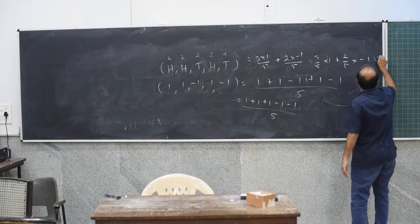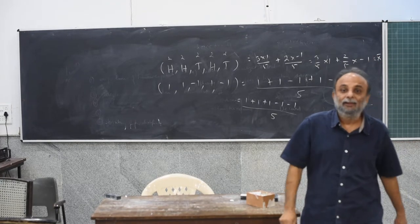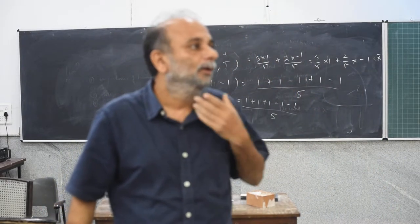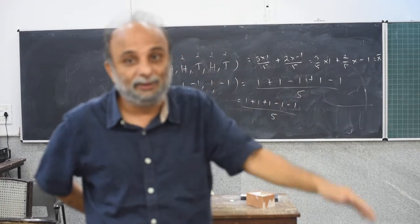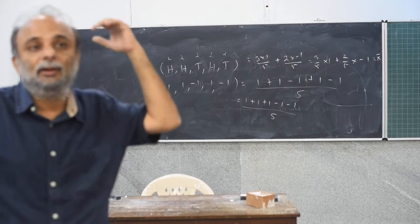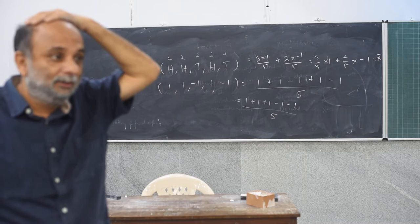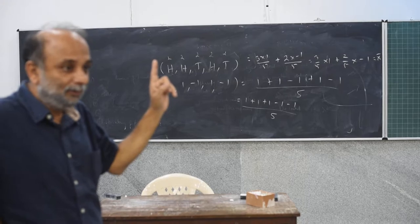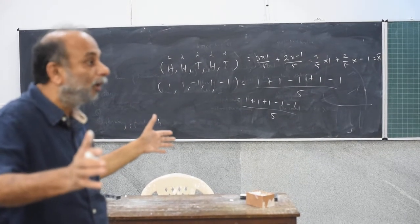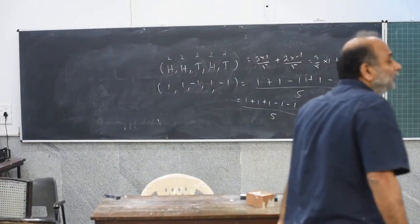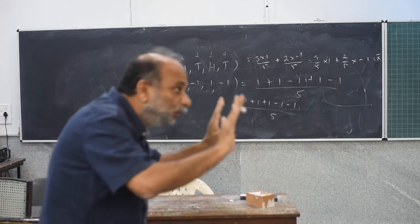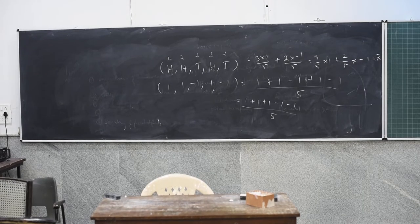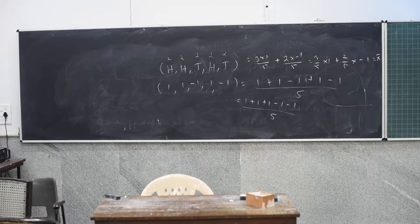Which I will write as x-bar, the average of x. Now you see what is x-bar? What is plus 1 and minus 1? The two outcomes of the random variable. So plus 1 and minus 1 are two outcomes of the random variable. What is 3 upon 5? The proportion of heads — we will call it the relative frequency of 1. The number of times 1 occurs divided by the total number of occurrences.